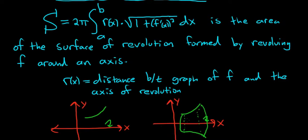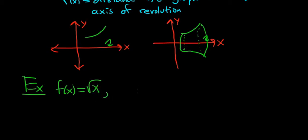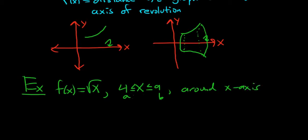Let's do a simple example so you see how it works. Let's say f of x equals the square root of x, and we're going to work over the interval from 4 to 9 — so that'll be our a and our b. And we're going to spin this around the x-axis and find the area of the surface of revolution.